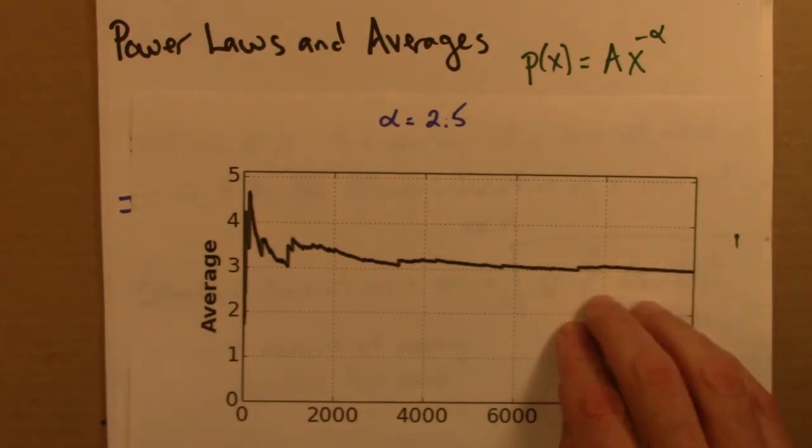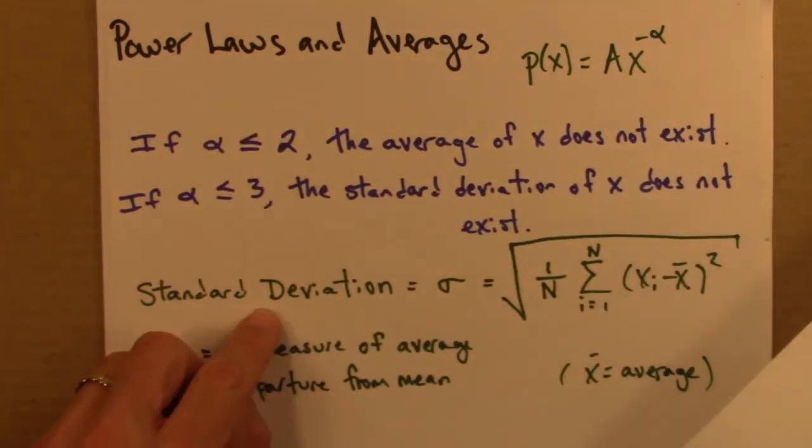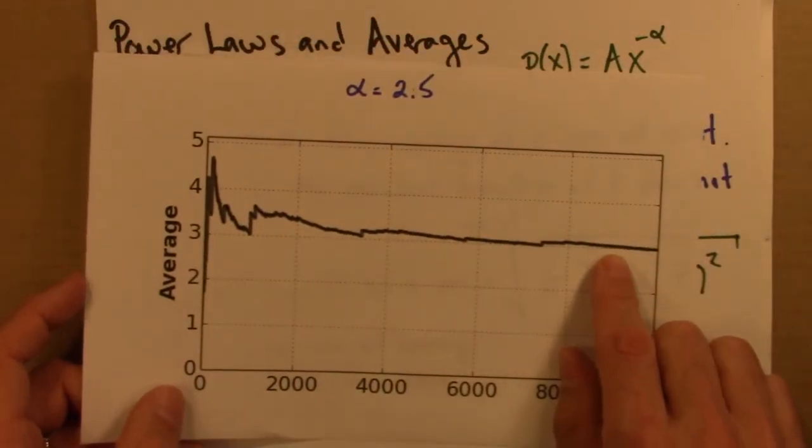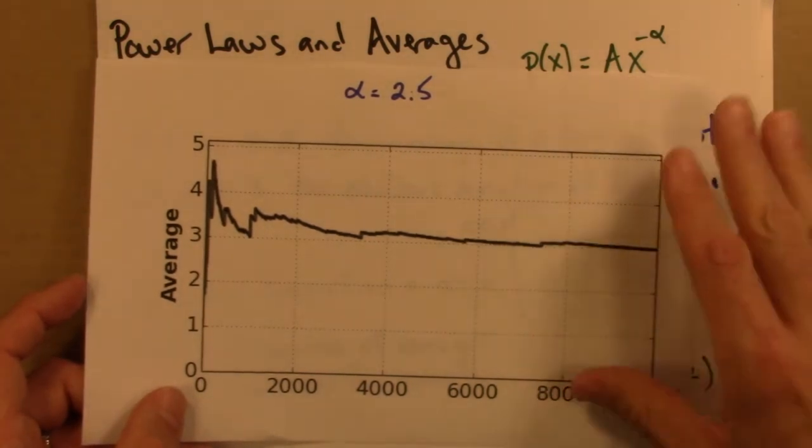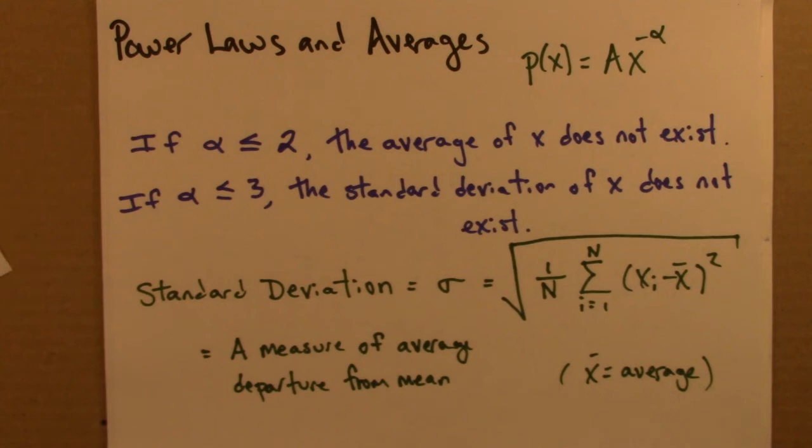But when describing a situation, the average is only part of the story. We also need to think about how much variation there is about the average. And that's what the standard deviation tells us. So, this has a well-defined average of 3, but what about the variation around 3? Is that well-defined? Well, it turns out that it's not.